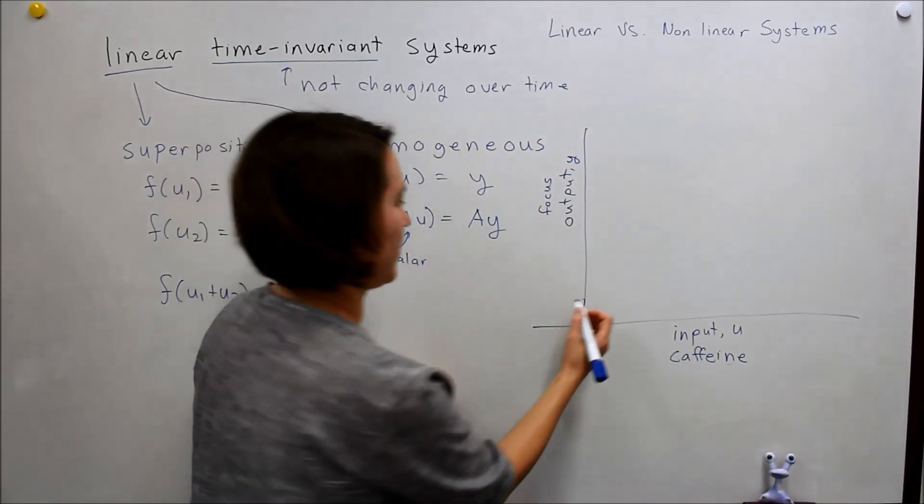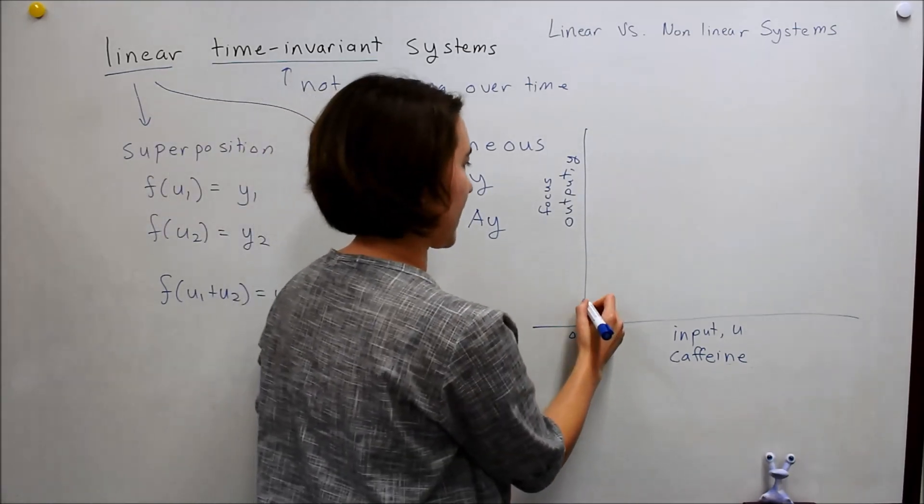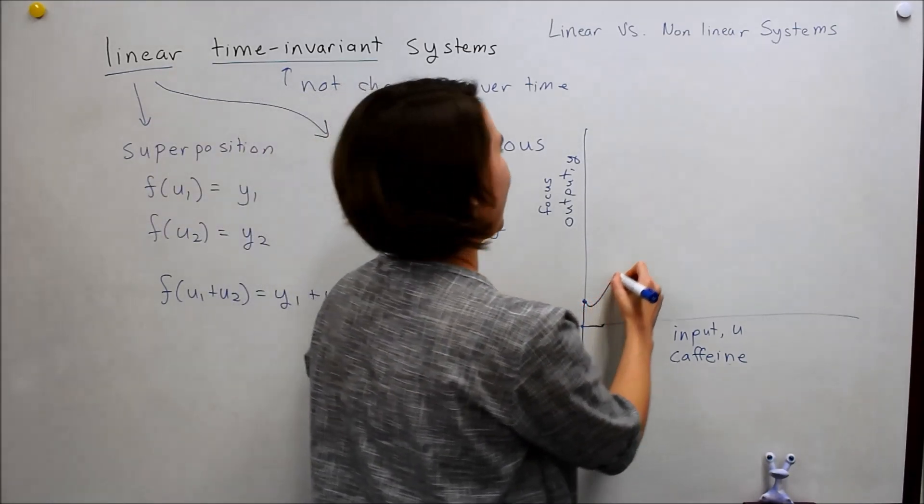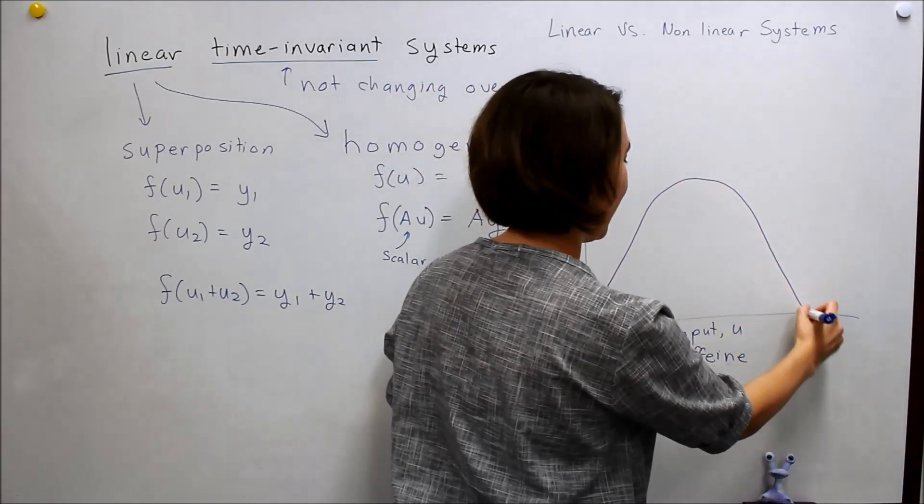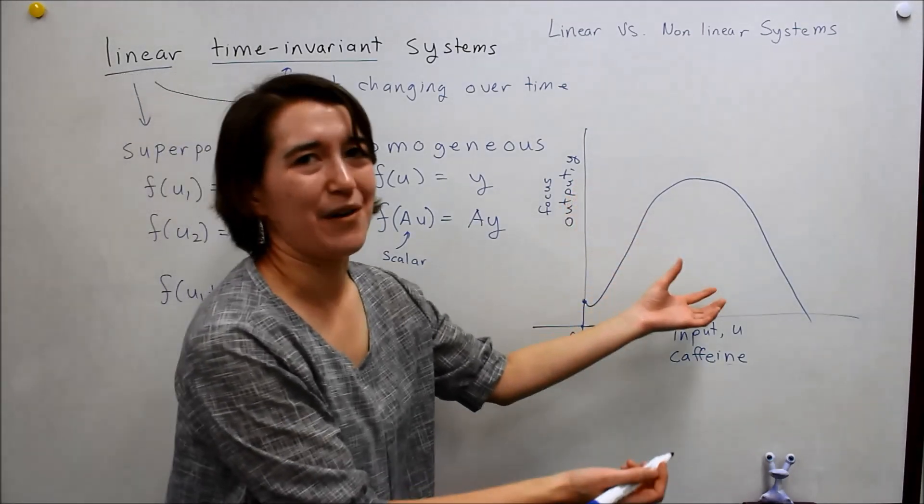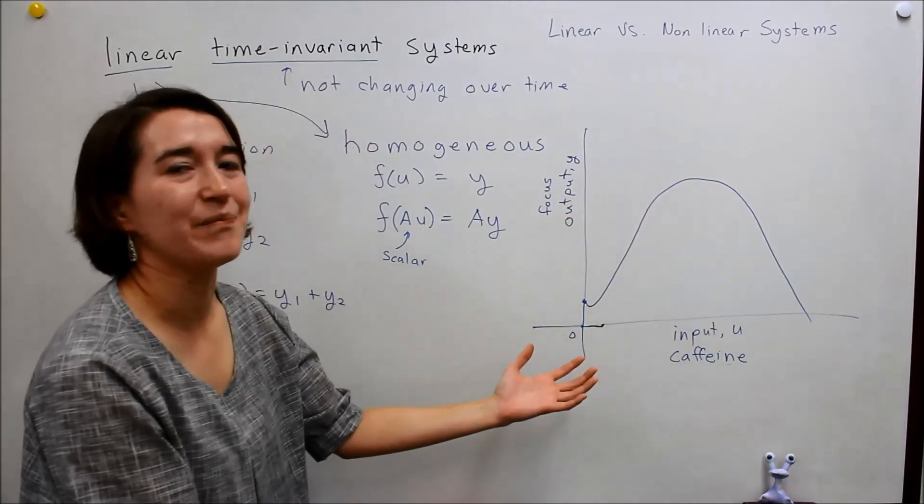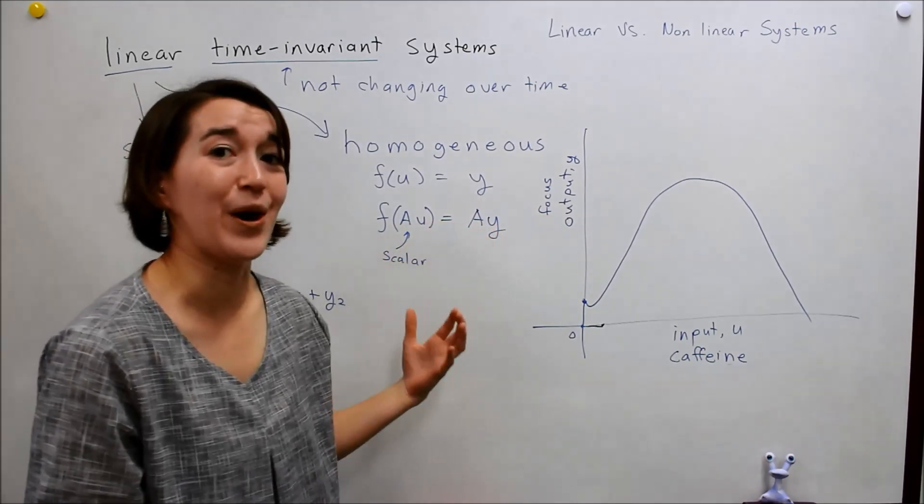So, maybe actually you can focus a little bit without any caffeine. So, we put in a little bit of caffeine, and maybe you are really good at focusing, but if you have too much caffeine, it'll start to actually decrease. So, here's an example of a non-linear system based on how much caffeine you have and how well you can focus.